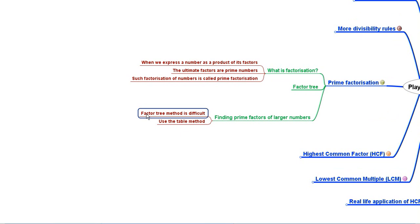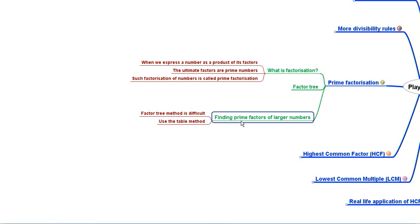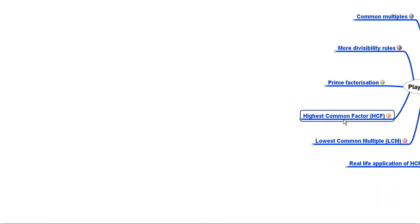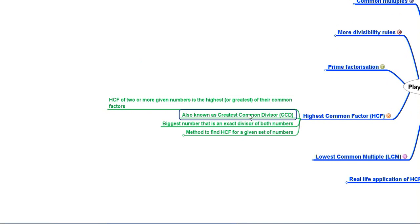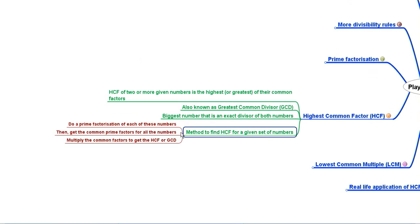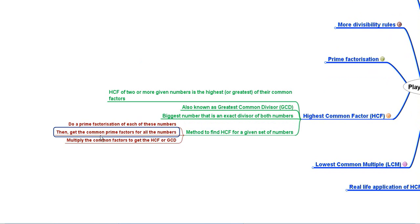We also learnt a table method to find prime factors of larger numbers. Then we discussed the Highest Common Factor (HCF), also known as the Greatest Common Divisor (GCD). The HCF of two or more numbers is the highest of their common factors — the biggest number that is an exact divisor of all the given numbers. To find HCF, we do prime factorization of each number, identify the common prime factors, and multiply them.